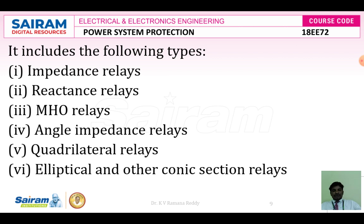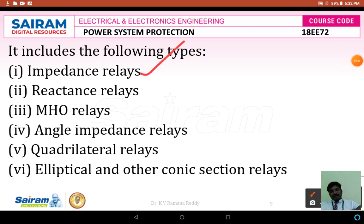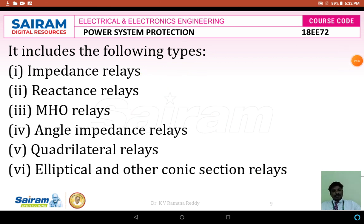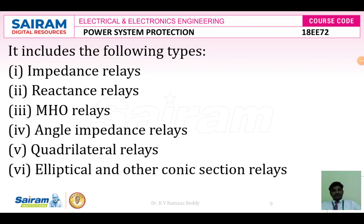The most important and versatile family of relays in the distance relay group includes the following types: the impedance relay, the reactance relay, the mho relay, the angle impedance relay, the quadrilateral relay, and elliptical and other conic section relays. These are the different types of distance relays used to form an individual protection scheme and to give better operation whenever overcurrent relays become slow or complicated to use.